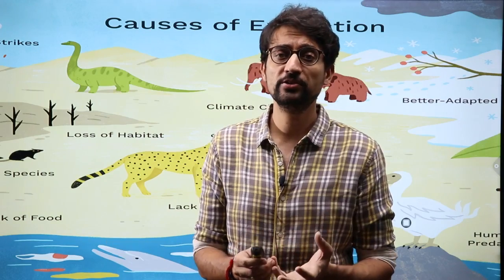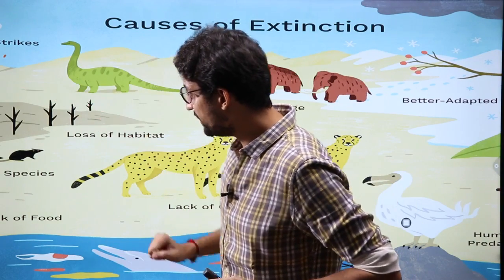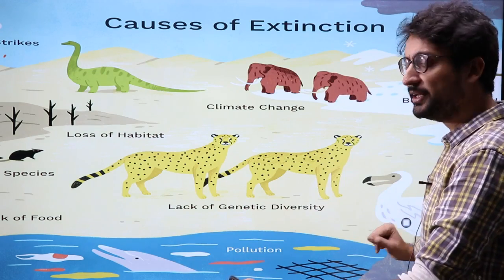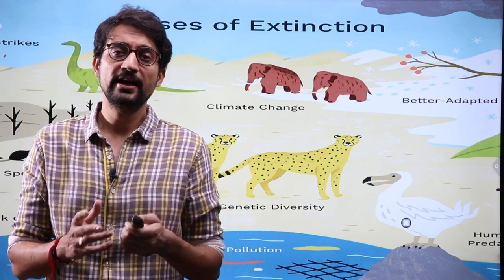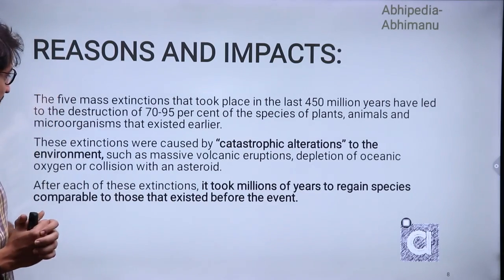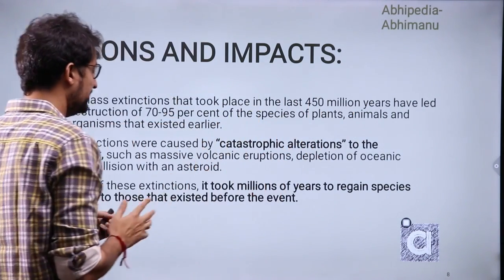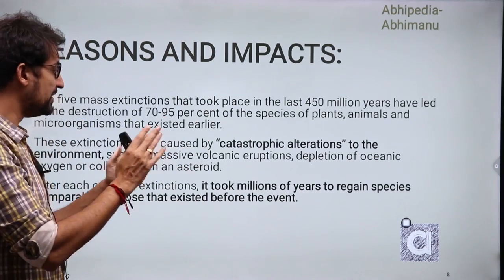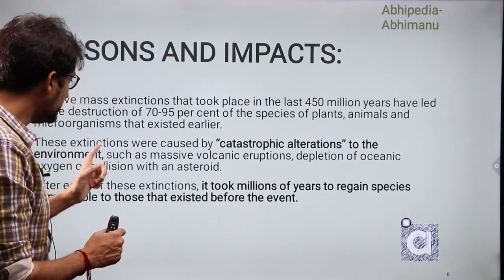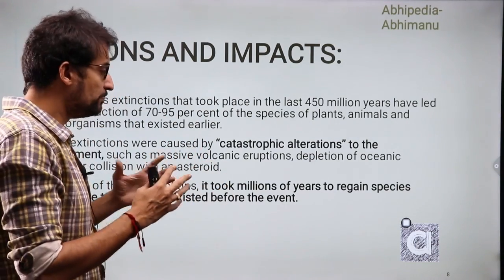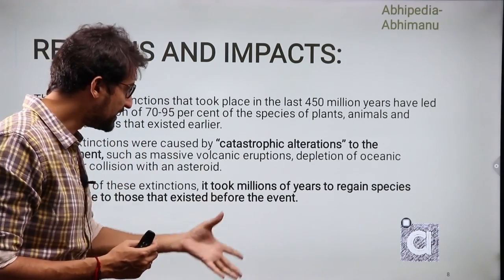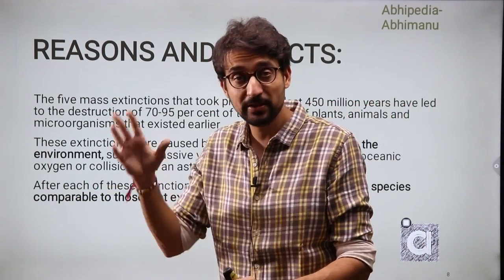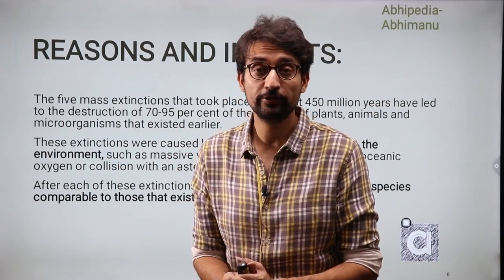Let us first look at what the possible reasons for mass extinction can be — definitely an asteroid strike, habitat loss, climate change, lack of genetic diversity, or the inability of some species to adapt. These can all be factors. Now looking at the impacts: the five mass extinctions over the last 400+ million years caused almost 70 to 95% of plants, animals, and other microorganisms to vanish. These extinctions were caused by catastrophic, spontaneous alterations — an asteroid impact or a volcanic eruption. After all these mass extinctions, it takes millions and millions of years to recreate that ecosystem.